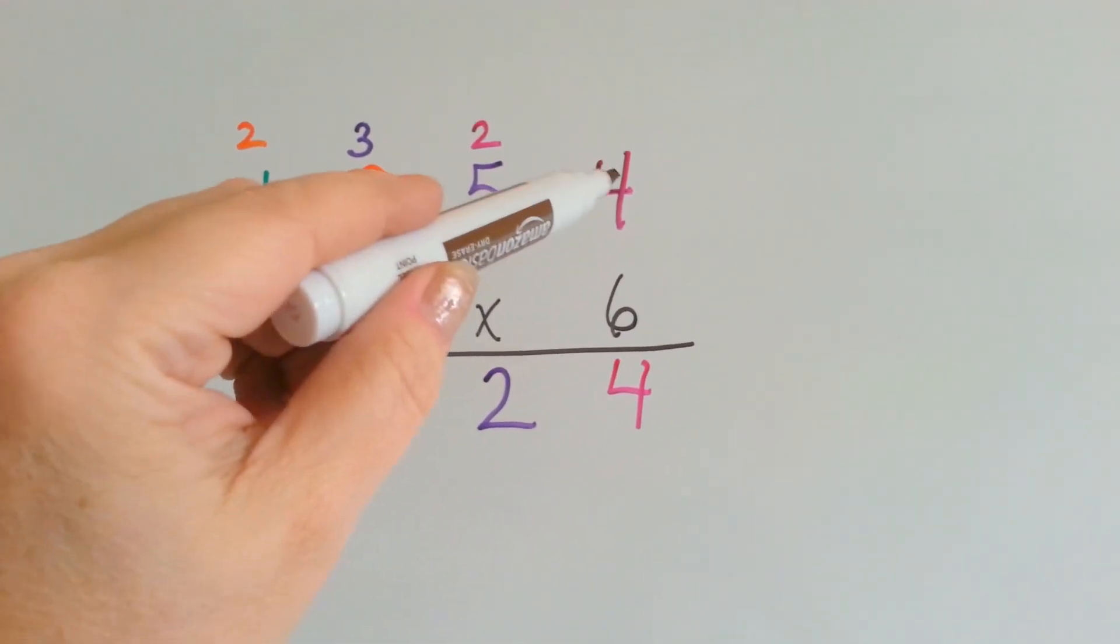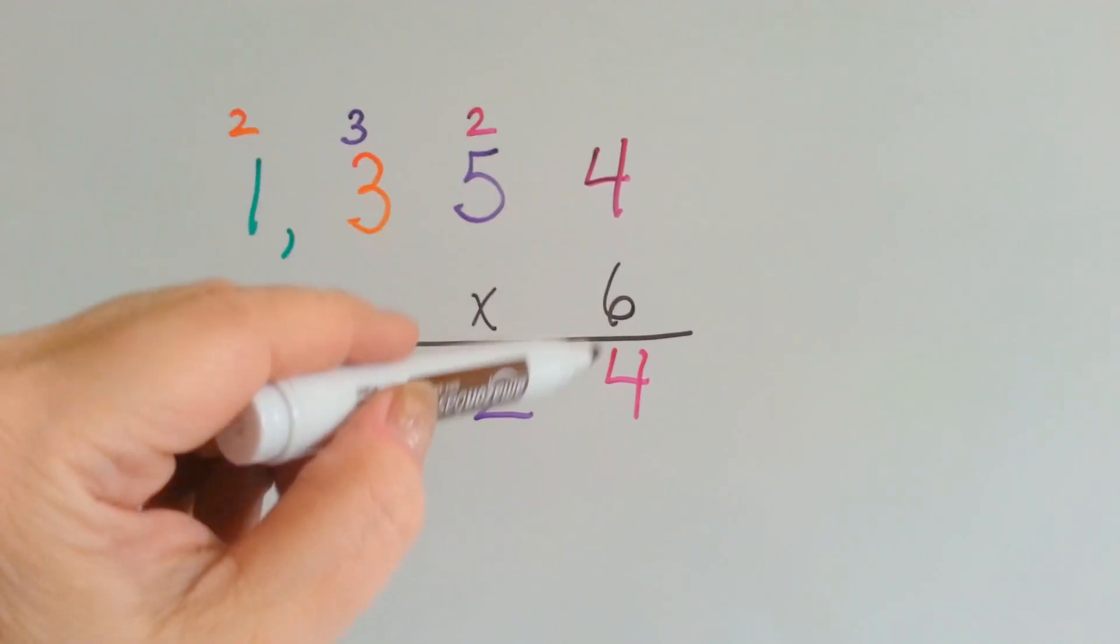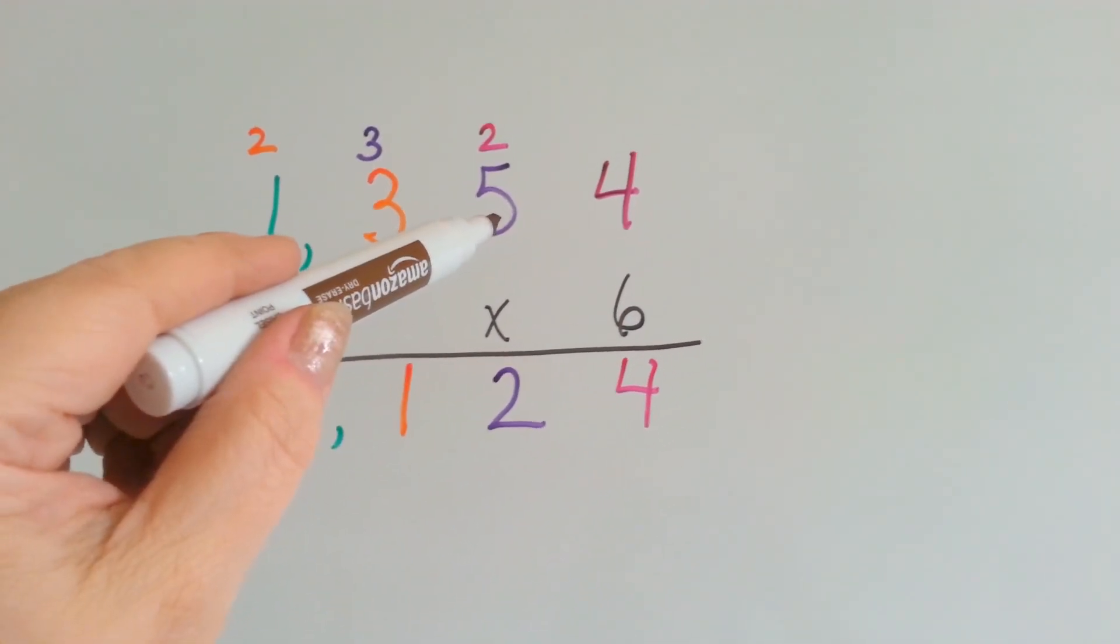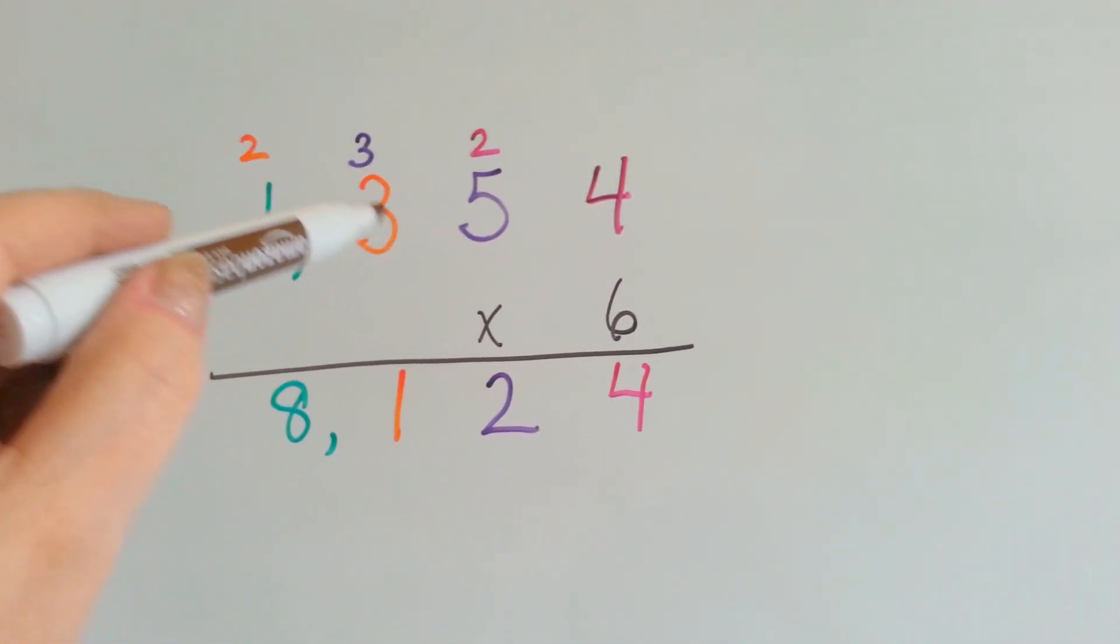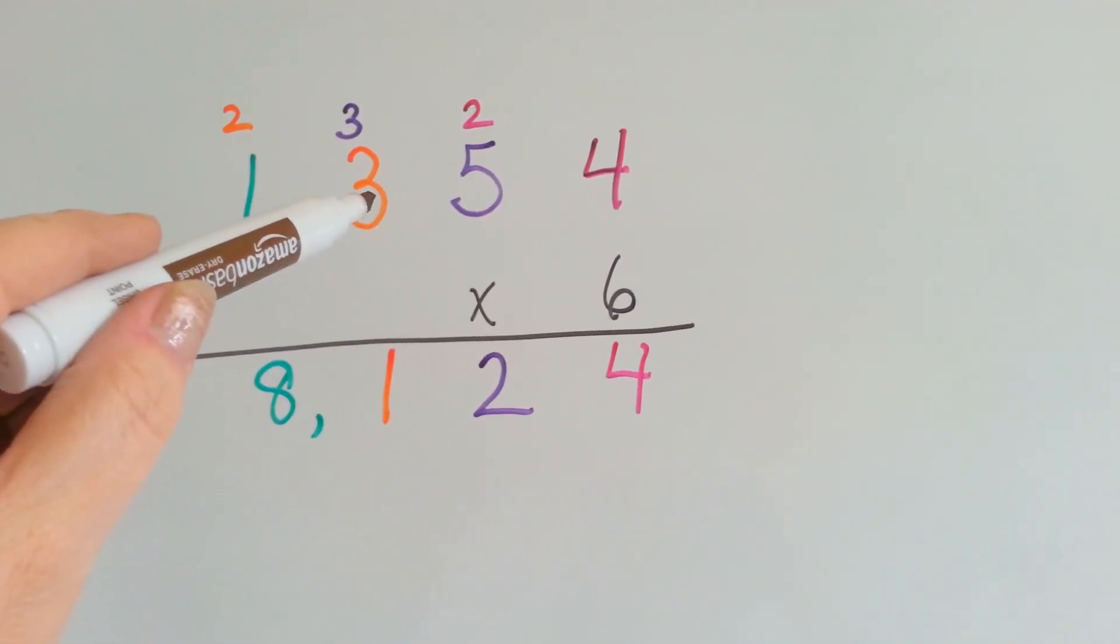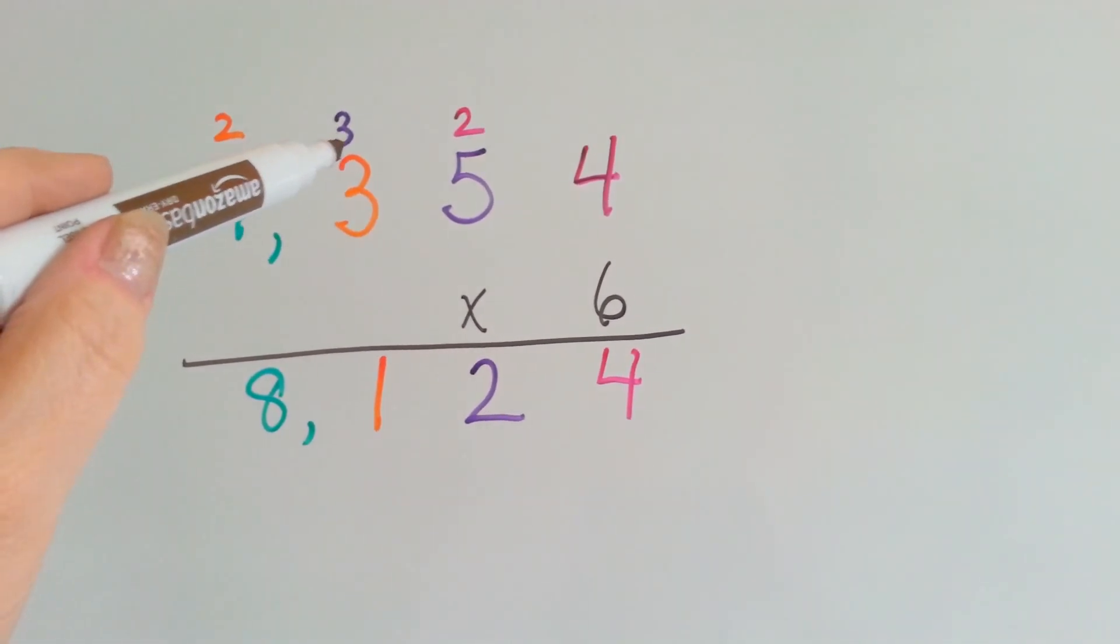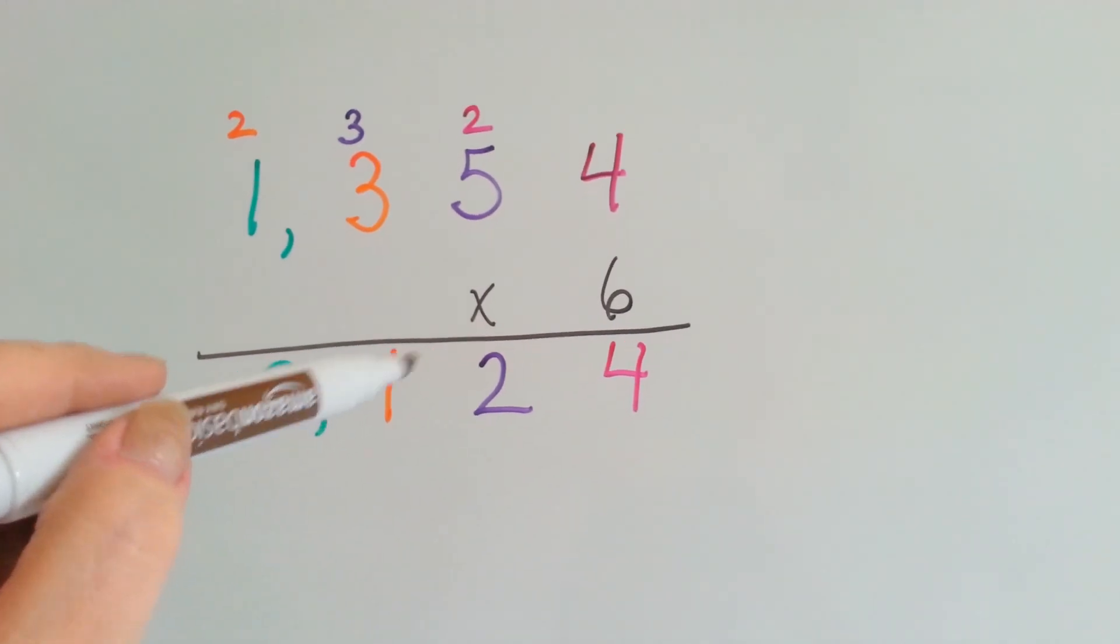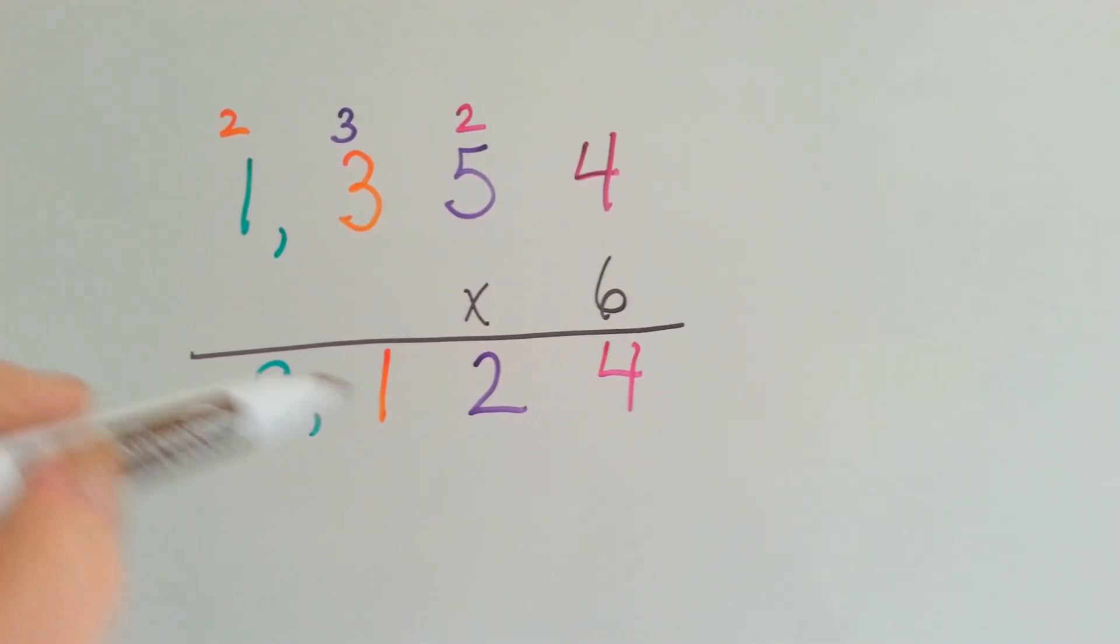Let me show you. 6 times 4 is 24. We carry the 2 over and put the 4 down. 6 times 5 is 30, plus the 2 we carried over is 32. We carry the 3 over and put the 2 down. 6 times 3 is 18, plus the 3 is 21. We carry over the 2 and put the 1 down. 6 times 1 is 6, plus 2 is 8.